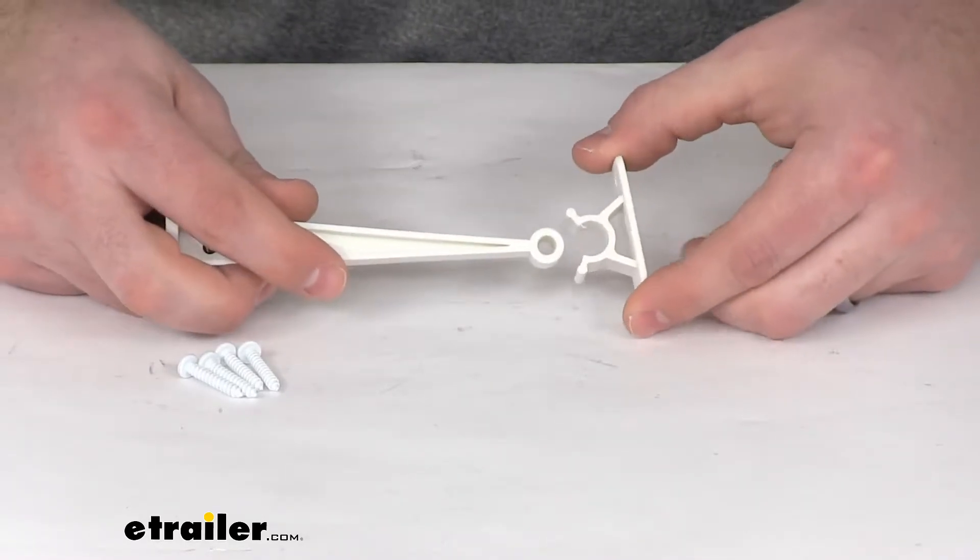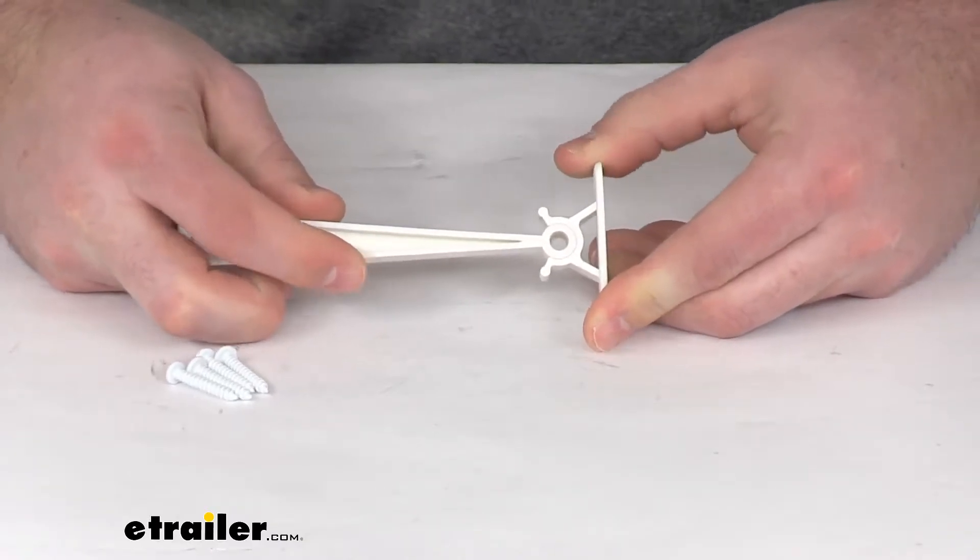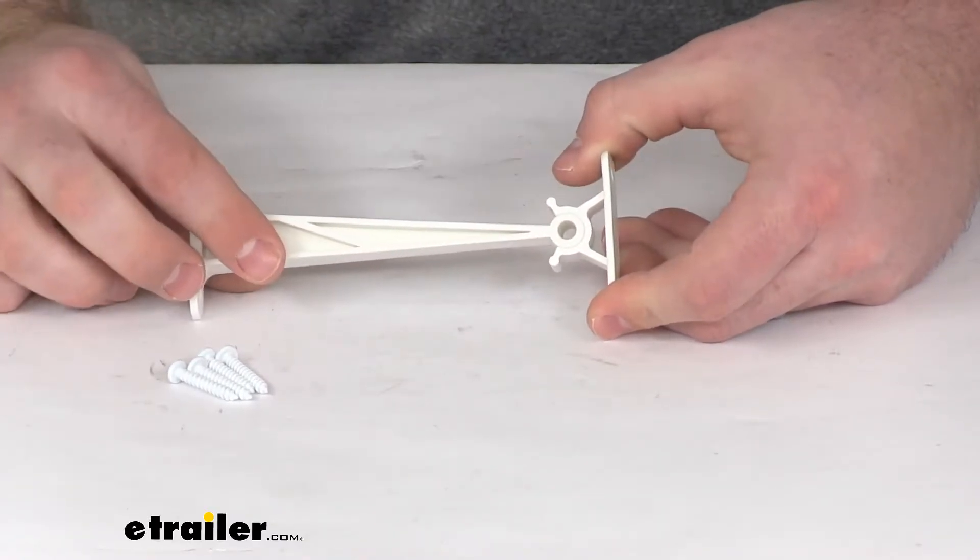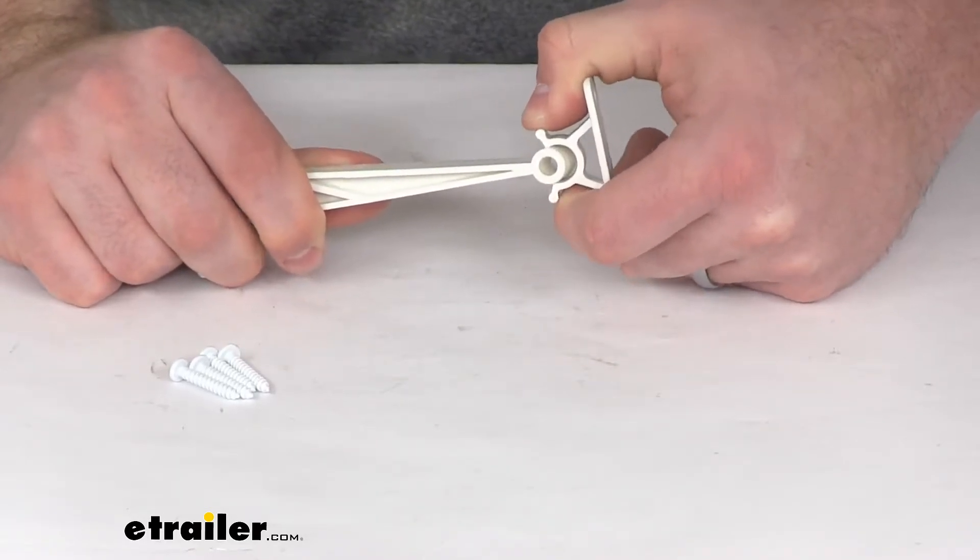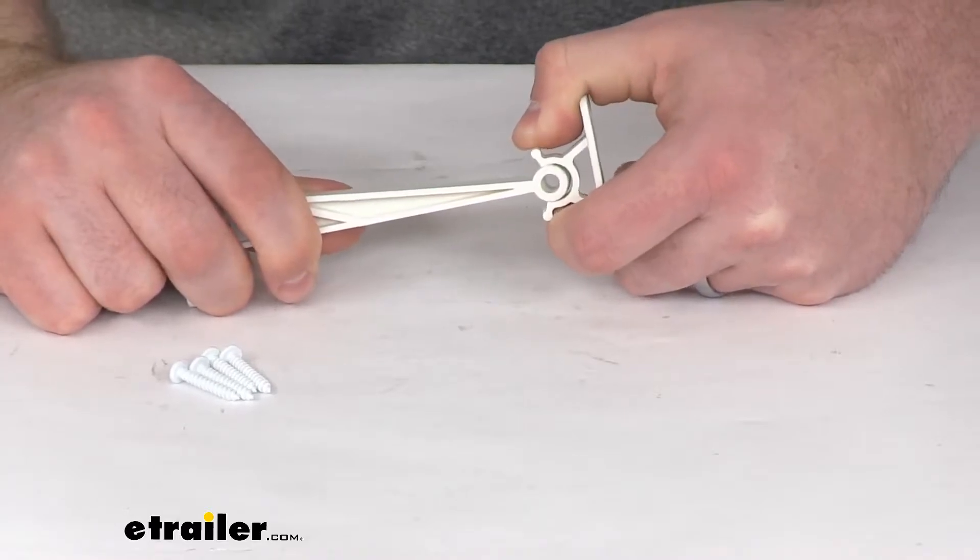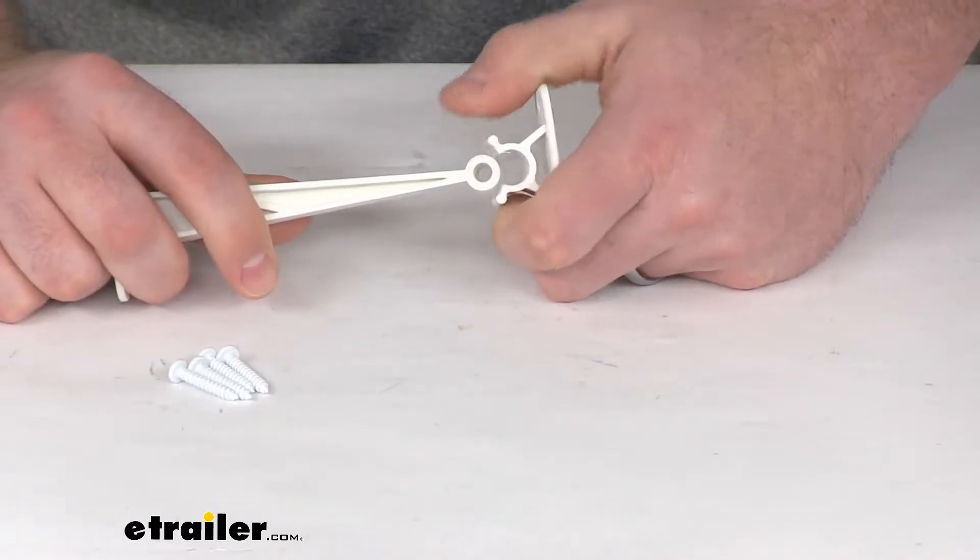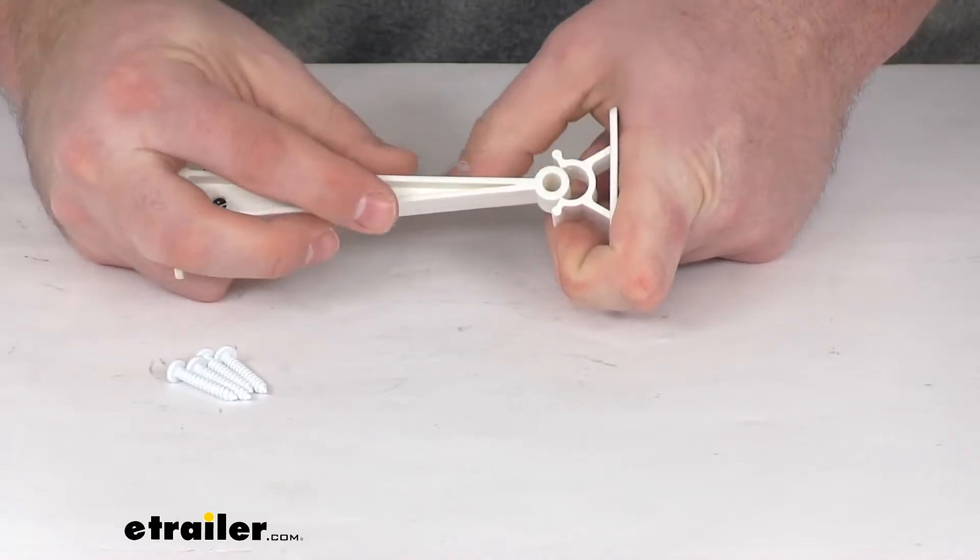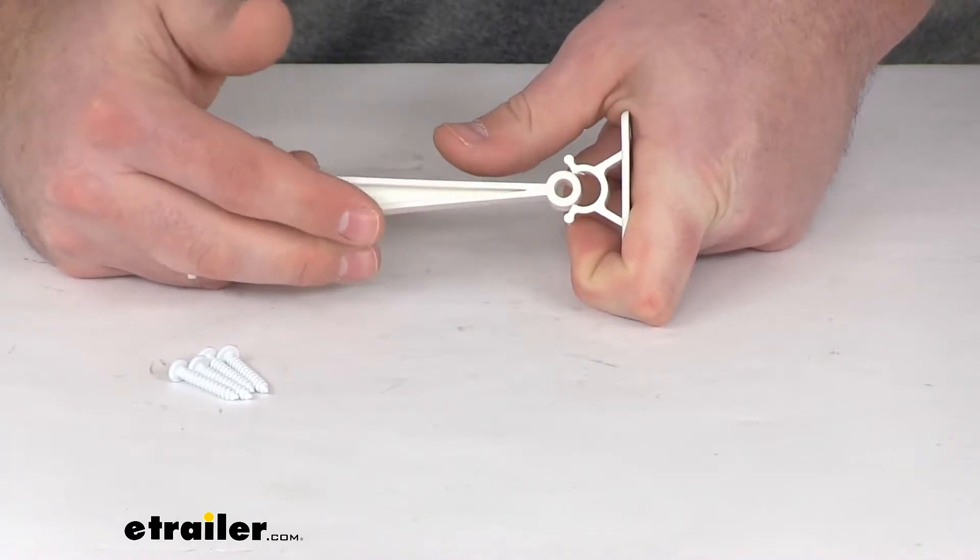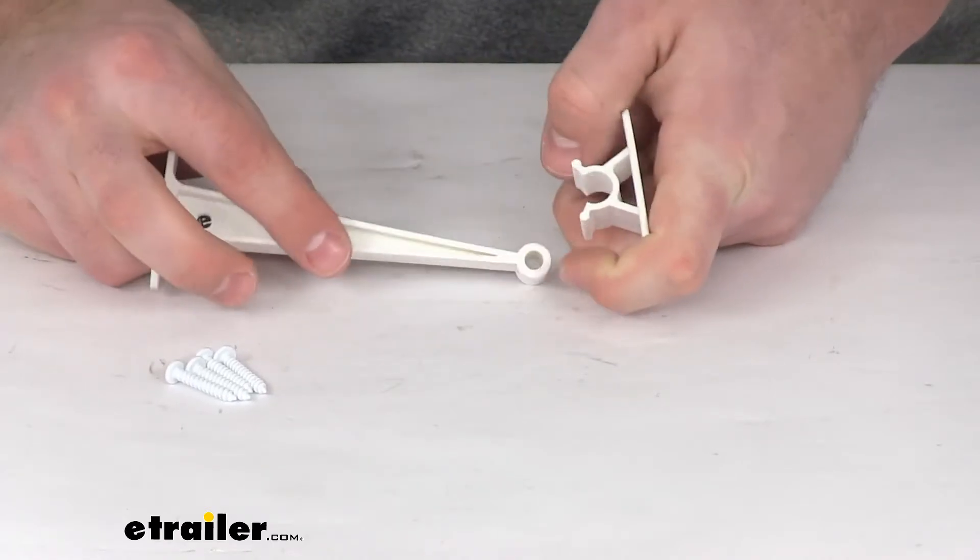You can see it's got a very firm hold onto our knob here. As we open the door we can put it in place, and when we want to close the door we'll pull on it. It will take a little bit of effort, but that's good because we don't want it to get away from us in a windstorm. It's very simple to get installed.